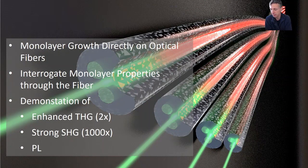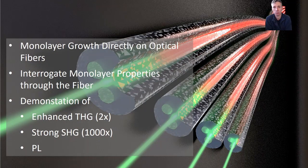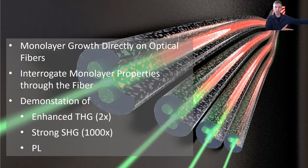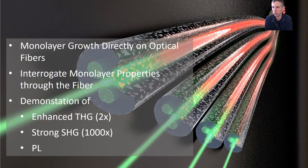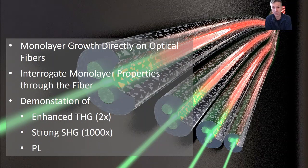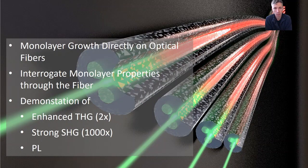As a summary: using monolayer growth directly in optical fibers, we can produce a hybrid system where we access the properties of transition metal dichalcogenides directly in a guided wave environment and interrogate monolayer properties through an optical fiber, providing a new platform for experiments in optics and photonics with 2D materials. I have demonstrated strong second harmonic generation and in-fiber photoluminescence today. We have also looked into enhanced third harmonic generation, but due to time limitations I have not spoken about that today. Thank you very much for your attention and I'm happy to take questions.